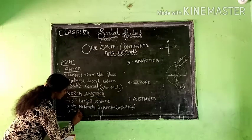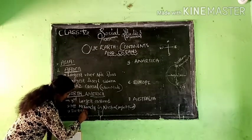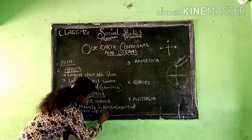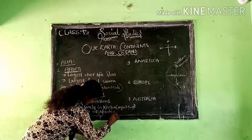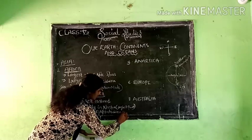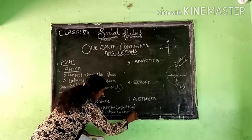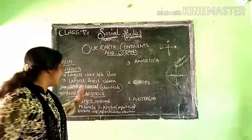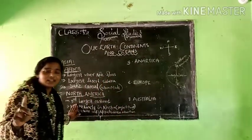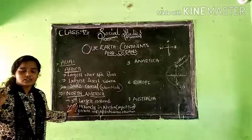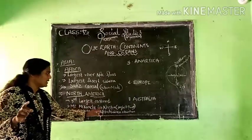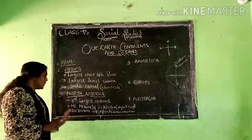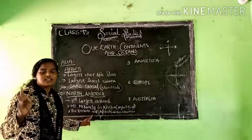There are two other mountains: the Rockies and the Appalachian mountains. So, North America is the third largest continent, it is in the Northern Hemisphere, the highest point is Mount McKinley in Alaska, and the two mountain ranges are the Rockies and the Appalachian mountains.